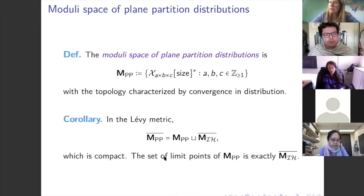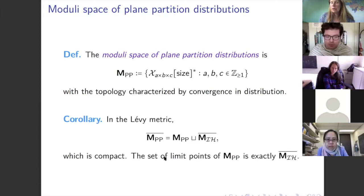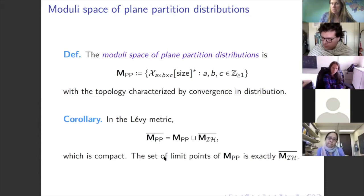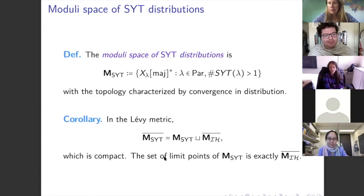There is a moduli space of plane partition distributions: all standardized random variables for plane partitions in A×B×C boxes, with the Lévy metric topology. When you take the closure, you must add in the closure of the Irwin-Hall distributions — all the Irwin-Halls plus the normal. That's exactly the set of limit points for plane partitions. Similarly restating the old theorem: there is a moduli space of standard Young distributions whose closure is also exactly the closure of the Irwin-Hall distributions. So plane partitions and standard Young tableaux give the same moduli space.